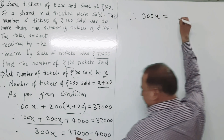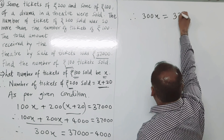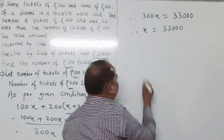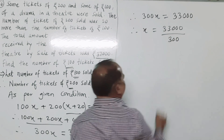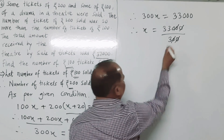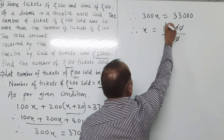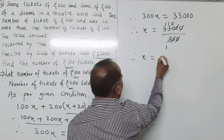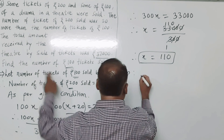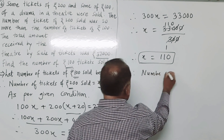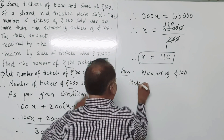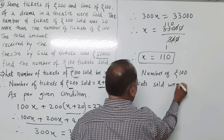Solving: 100x plus 200x plus 4000 equals 37,000. So 300x equals 37,000 minus 4000, which equals 33,000. Therefore x equals 33,000 divided by 300, which equals 110. So the number of rupees 100 tickets sold was 110.